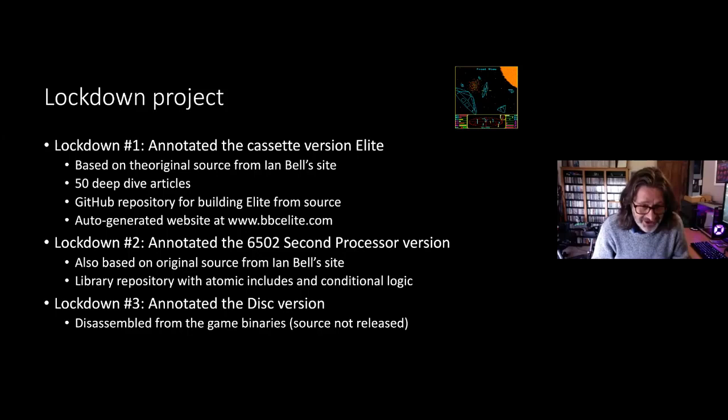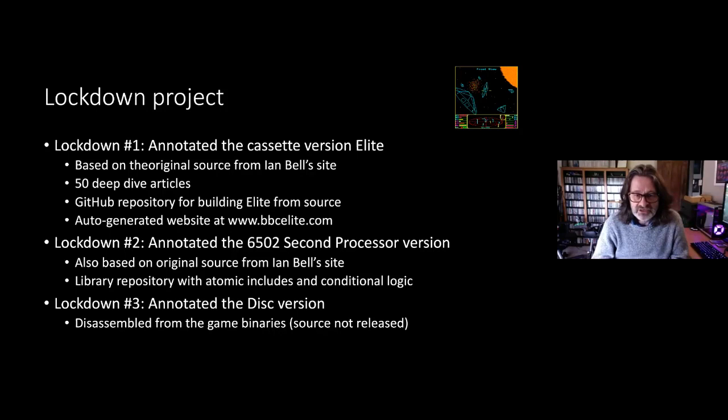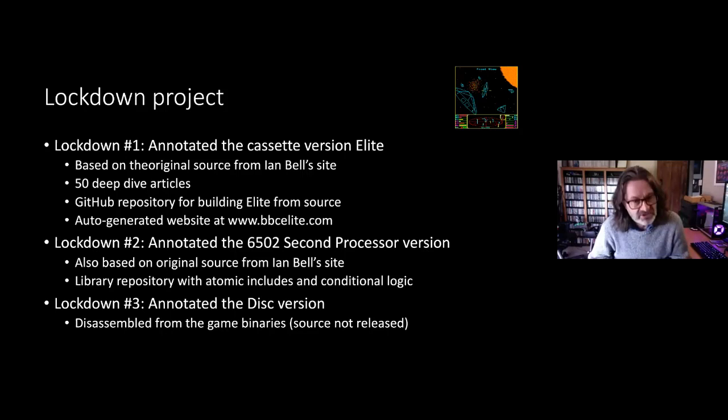Back in lockdown one I was looking for something to do and decided that annotating the source code of Elite would keep me busy. The original source is available from Ian Bell's site — one of the co-authors of Elite. I took that, added lots of comments, wrote lots of deep dive articles, created a GitHub repository where you could build the source, and put it all on a website bbcelite.com that contains the source automatically generated from the GitHub repository.